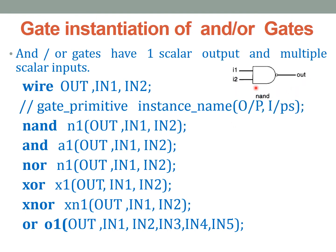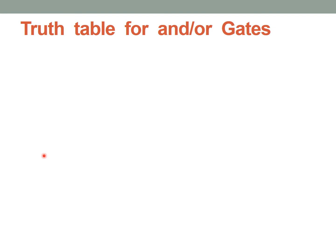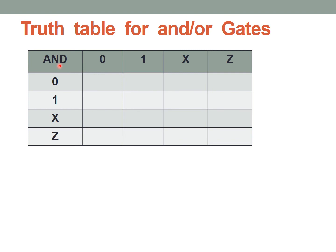Now let us observe the truth tables of each of the AND/OR gates. The four-value set in Verilog is 0, 1, X, and Z. For the AND gate, if any one input is 0, the output is 0 irrespective of the other inputs. So the entire first column and first row are 0. For 1 AND 1, the output is 1. For 1 AND X (unknown), the result is unknown because X can be either 0 or 1. Similarly, 1 AND Z gives an unknown value.